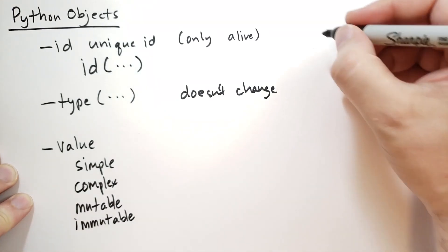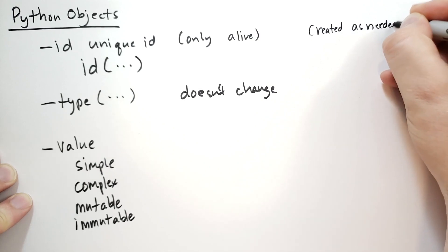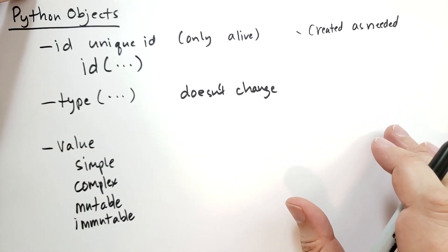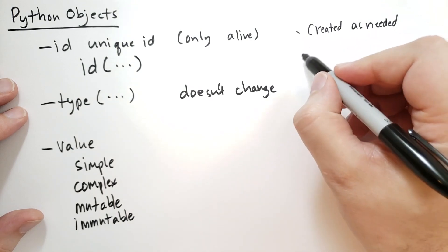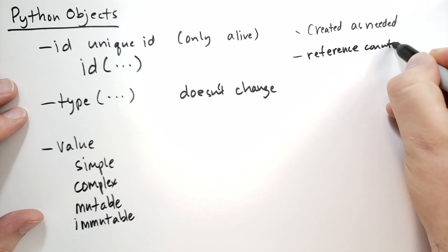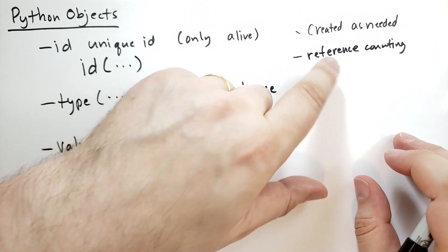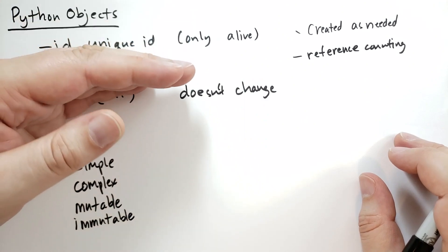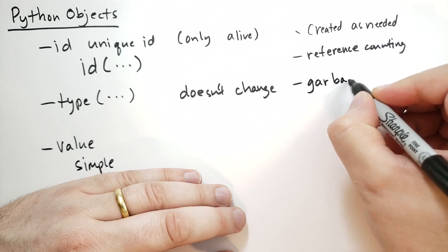Python objects are created as needed. So typically they arise as a result of some expression. Then the objects have a life cycle and there's reference counting involved. Python keeps track of every variable that references the object. It increments that number every time there's a new reference, and when that reference is lost, it decrements that count. And then finally, at the end of the life cycle, it is garbage collected.